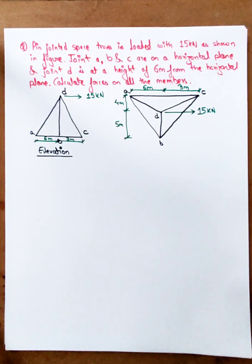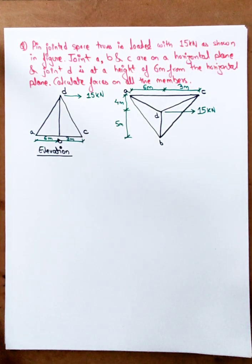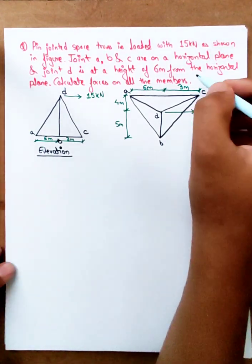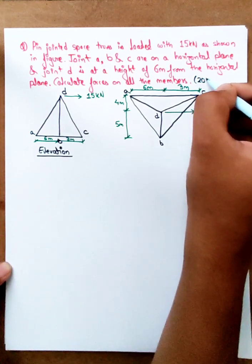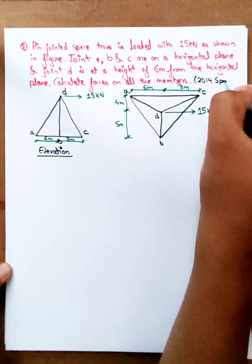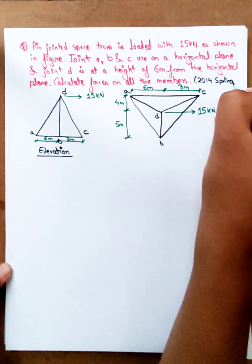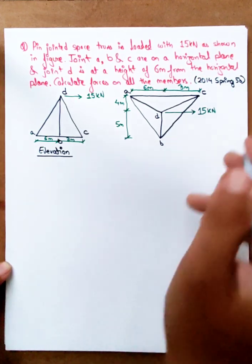This is the second numerical of Space Truss. This is the result from spring 2014. Question number 5 is the question of Space Truss.